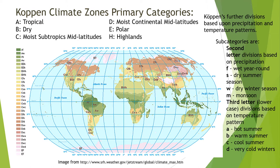These categories can be further subdivided based on the amount and timing of precipitation, represented by the second letter in lowercase, and based on their temperature pattern, which is the third letter, also in lowercase. The tropical regions are labeled A on the map, right around the equator. Dry regions, denoted with B, hover around 20 to 35 degrees north or south of the equator — you can see the Sahara Desert, western United States, and Australia's desert region.